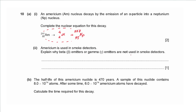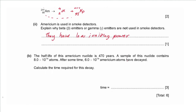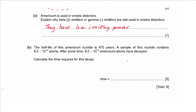Part ii: explain why beta emitters or gamma emitters are not used in smoke detectors. That is because they have low ionizing power, so they will not create a large enough current for the detector to work.